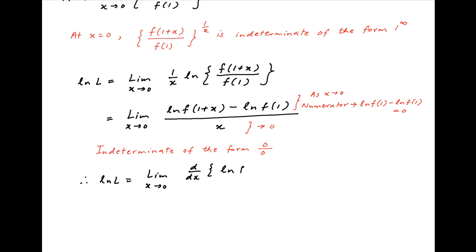that is d/dx of ln f(1+x) minus ln f(1), divided by the derivative of the denominator which is d/dx of x. This equals the limit as x tends to 0.